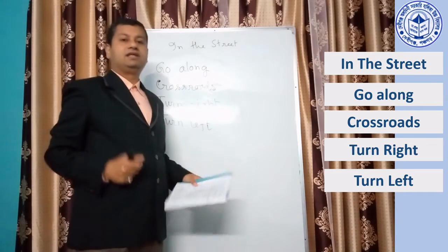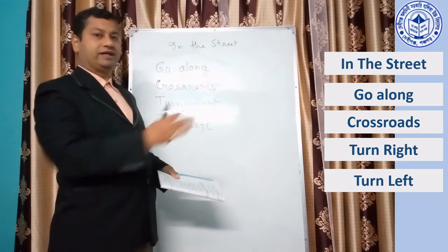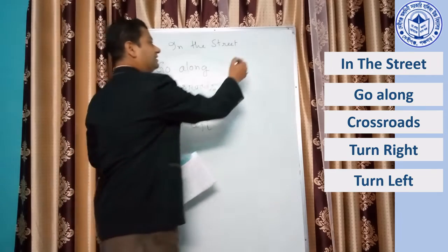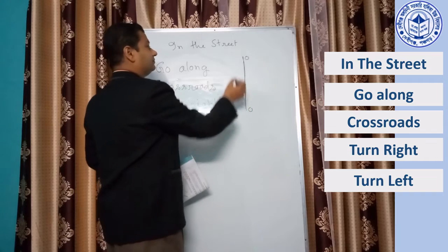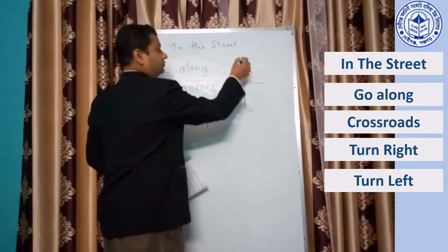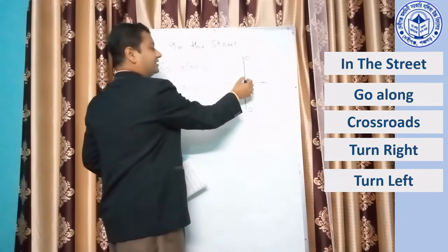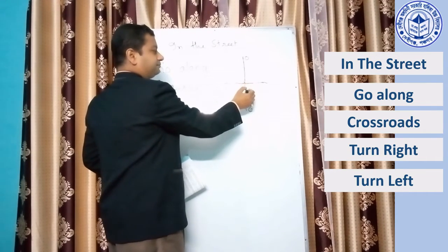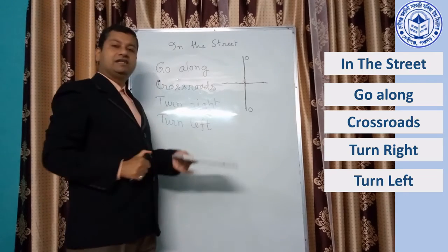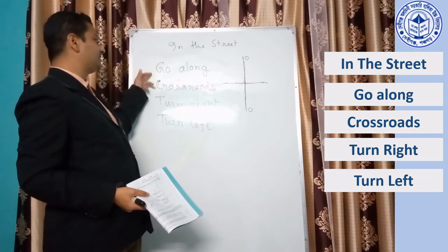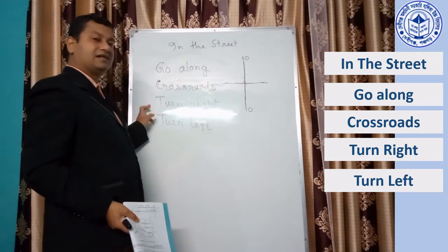'Go along' means if you want someone to go along a path or a way. If someone is here and you tell them to go this way, you say 'go along this way.' Crossroads — if there are two roads crossing like this, that is a crossroads or turning point. Here people can turn right, turn left, or go straight. So if you want to give directions to someone, you need mainly these four keywords: go along, crossroads, turn right, turn left.